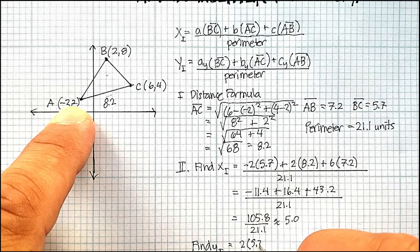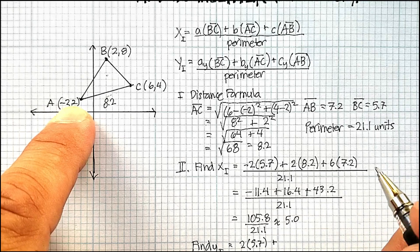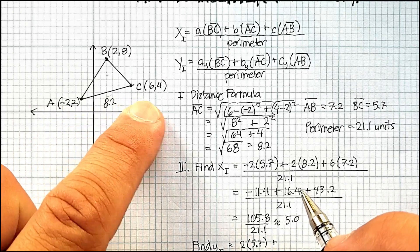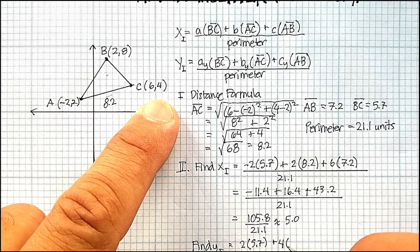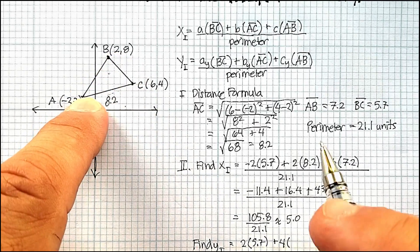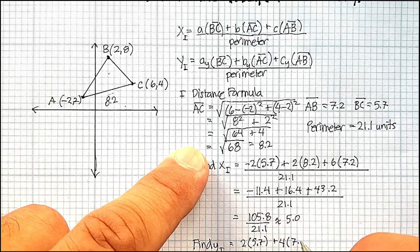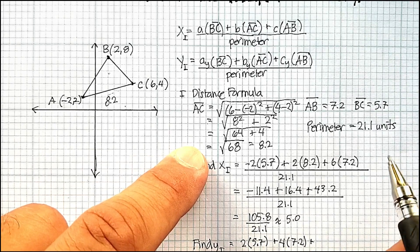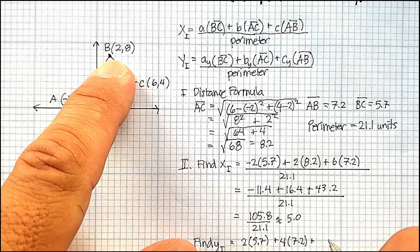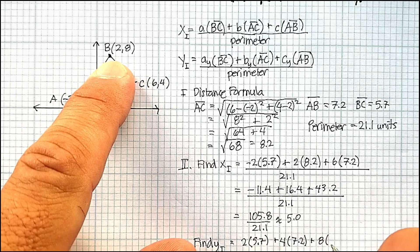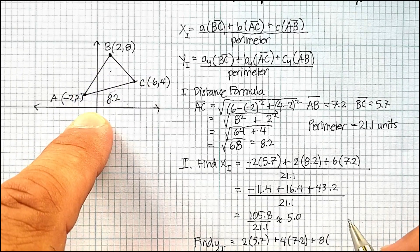Plus 4 times AB. And we said AB was 7.2, plus 8, the y value, times 8.2 here.